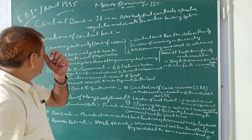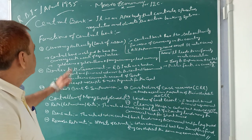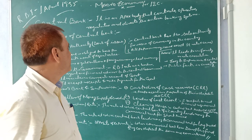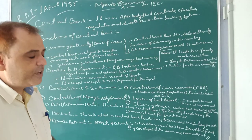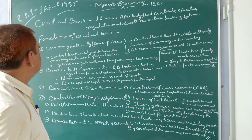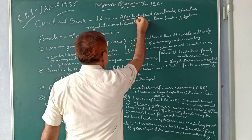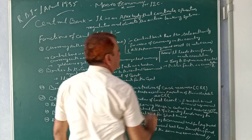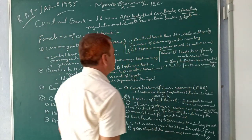Today we will learn about the functions of the central bank and how it operates. The central bank is a body that controls, operates, and directs the banking system. We have already studied about commercial banks. The central bank is an apex body that leads and controls all the banking systems and oversees all the operations they perform.